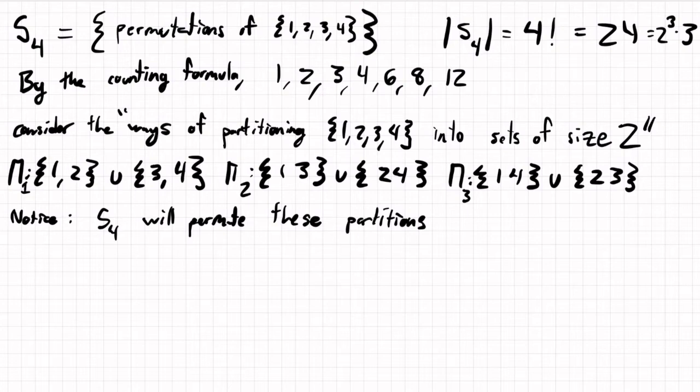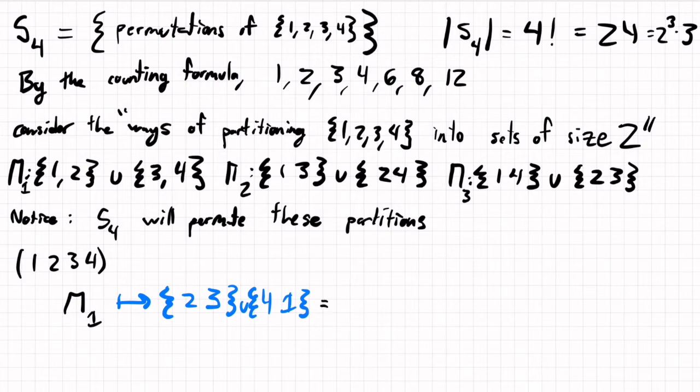So for example, the cycle (1,2,3,4) will take 1 to 2 and 2 to 3. 3 will go to 4, and 4 will go to 1. So, for example, π1: 1 will go to 2, 2 will go to 3, 3 will go to 4, and 4 will go to 1, which is precisely π3.